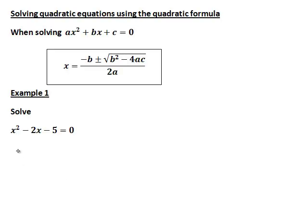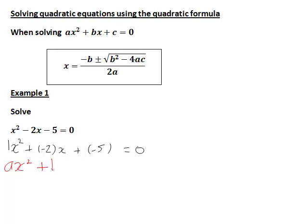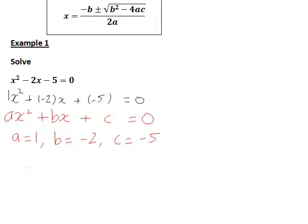First, solving x squared minus 2x minus 5 equals zero. This is already in the correct form, which we can think of as 1x squared plus negative 2 lots of x plus negative 5 equals zero — that is, in the form ax squared plus bx plus c equals zero. We can see that in this case a equals 1.